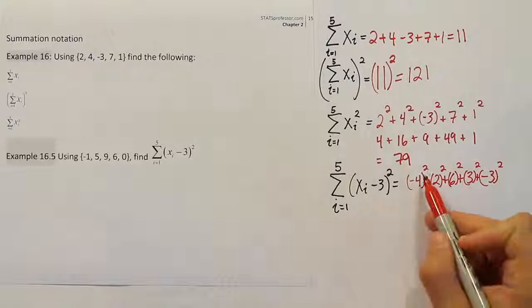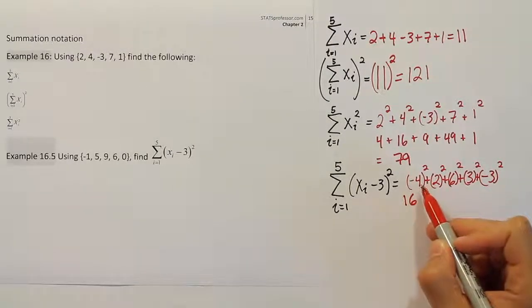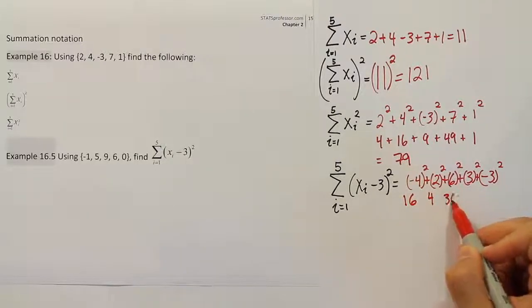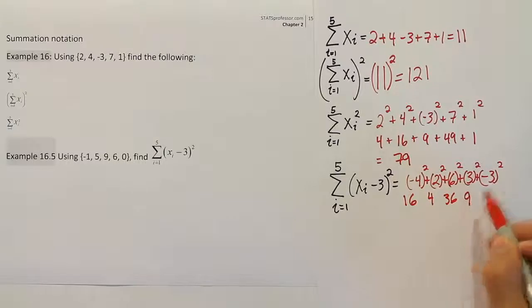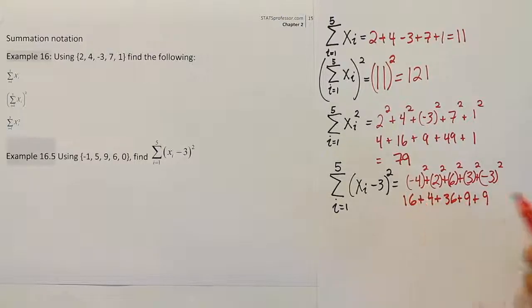So if I square negative 4, I will get positive 16. Remember, a negative number squared becomes positive. 2 squared will give me 4. 6 squared will give me 36. 3 squared will give me 9. And negative 3 squared will also give me 9.